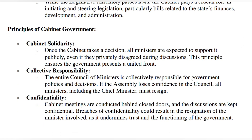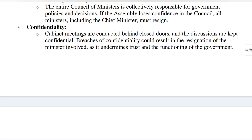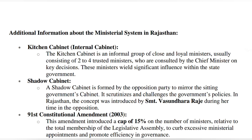Now, what are the principles of cabinet government? This is very important. Any decision they take must be kept confidential; discussions must be kept confidential. If this is breached, then questions are raised over trust and functioning. Kitchen cabinet, as mentioned, is an internal cabinet of 2–4 trusted members of the chief minister who help in taking important decisions. Shadow cabinet refers to some members of the opposition party who monitor government decisions — this concept was introduced in Rajasthan during Vasundhara Raje's time.